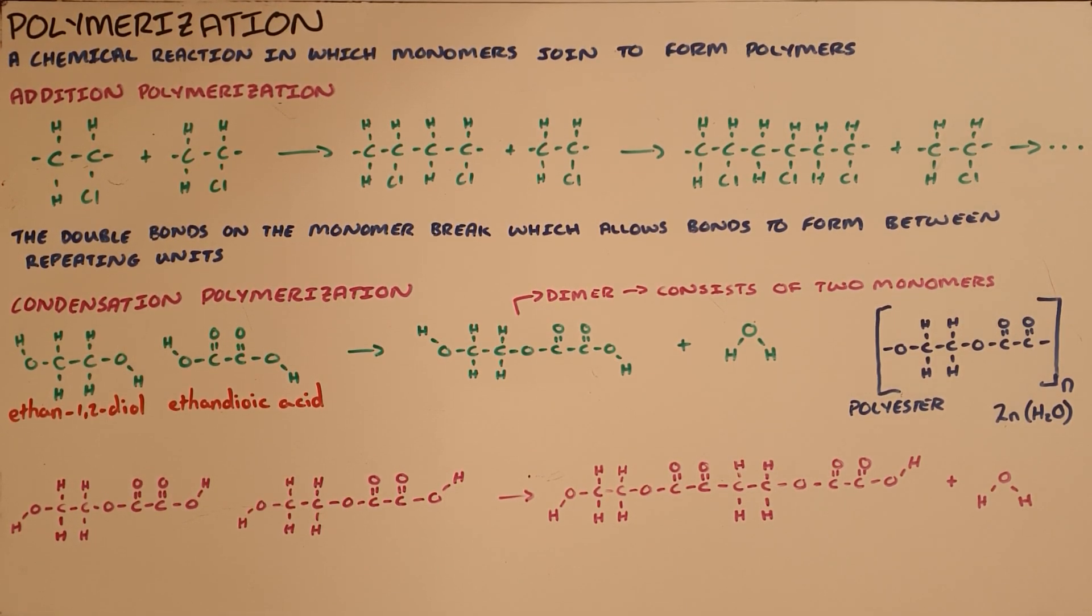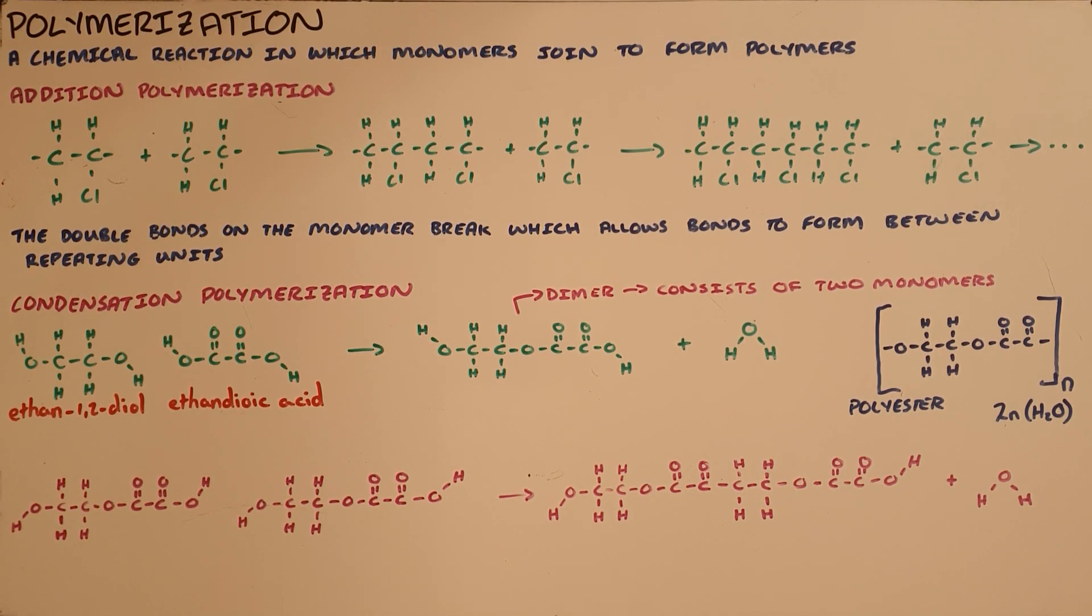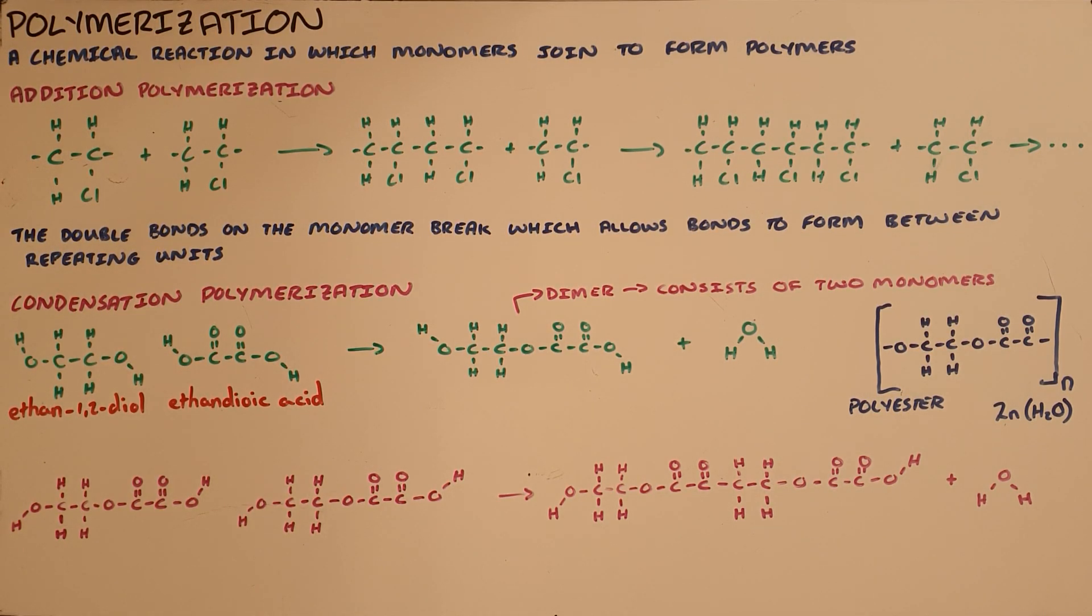Polymerization is a chemical reaction in which monomers join to form polymers, and there are two types of polymerization reactions. First is addition polymerization, where the double bonds on a monomer break, which allows bonds to form between the repeating units.